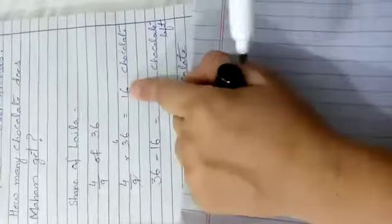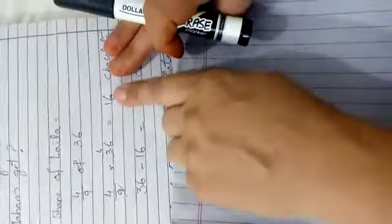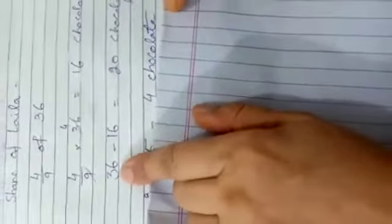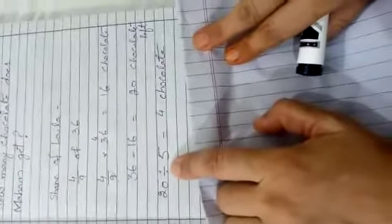Now see how many total chocolates. Total chocolates were 36. She has given to Laila 16, because 4 out of 9 means 16 chocolates. And how many chocolates are left? 20 chocolates. She said that 20 chocolates are left. Now, herself and 4 other friends, how many total? 5. So you have to divide 20 chocolates by 5. So each share will be 4 chocolates.